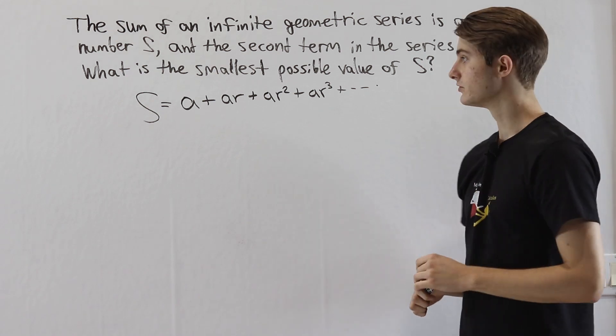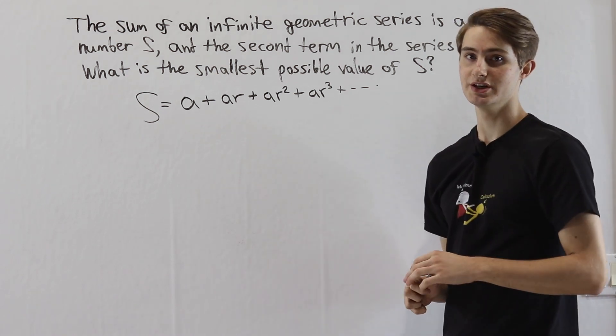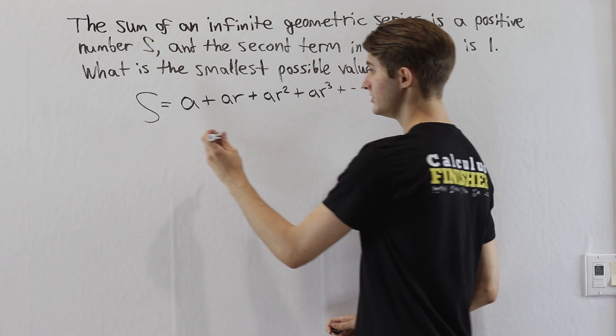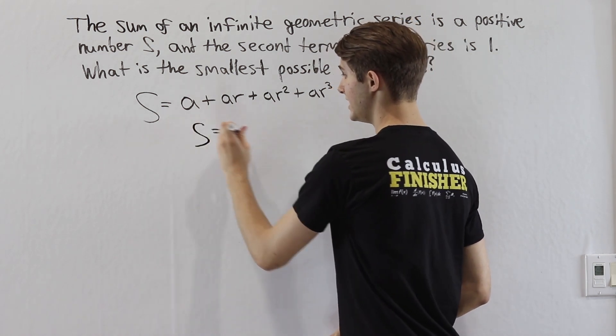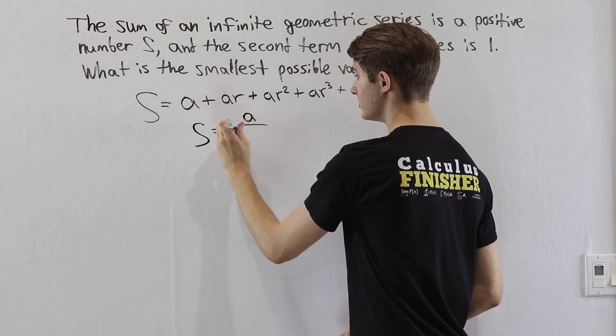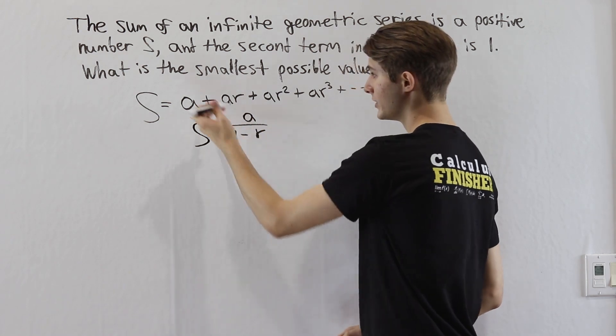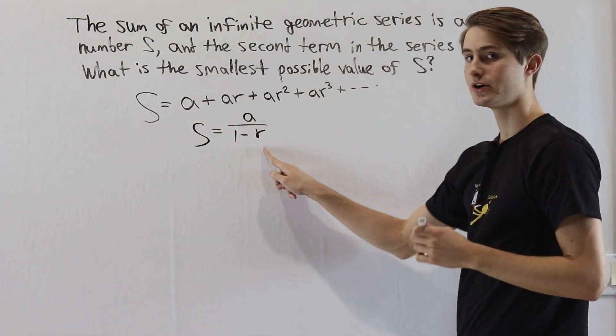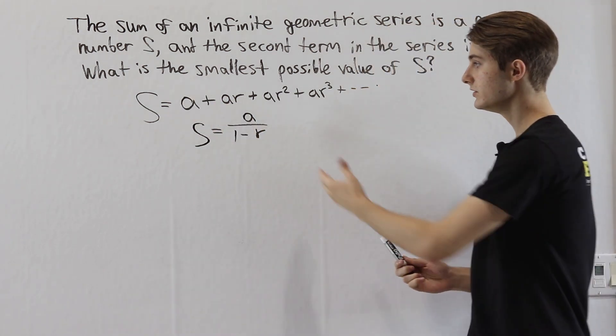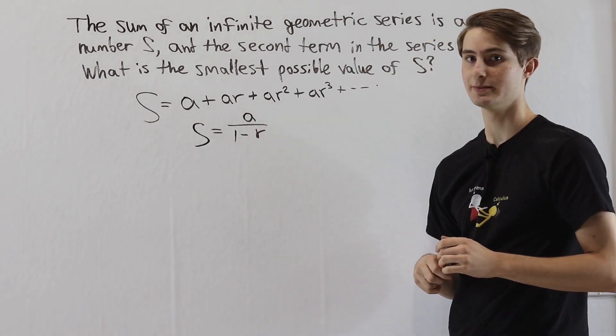We also know a formula for what a geometric series is equal to. An infinite geometric series is always going to have a sum s being equal to a over 1 minus r, where a is that first term and r is the common ratio. So we know this is going to be the value of s. This is what we're trying to minimize.